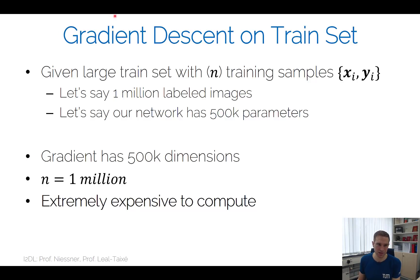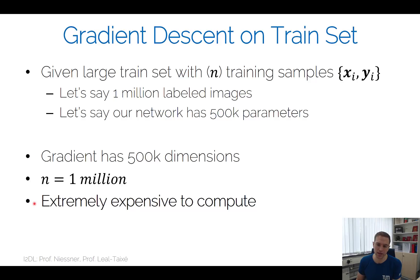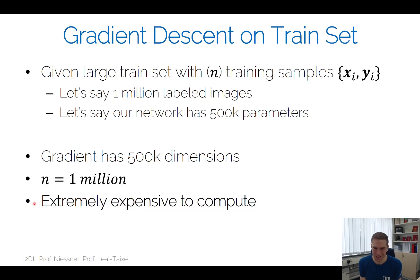With 500K parameters, each gradient has 500K dimensions. Even with mini-batches, most compute is in the gradient computation. GPUs excel at matrix operations and pure floating-point arithmetic — in practice every layer is a matrix multiplication, which maps very efficiently to the GPU, allowing you to parallelize and handle massive compute demands from network and data sizes.